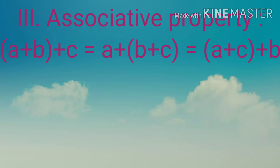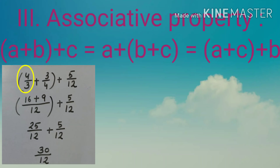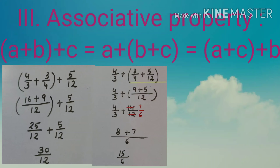The second property is the commutative property, which means the sum of two rational numbers remains the same even if we interchange their places. In symbolic form, a plus b equals b plus a. For example, 3/5 plus 4/5 or 4/5 plus 3/5 — the sum remains the same, that is 7/5.